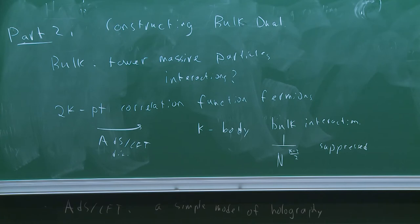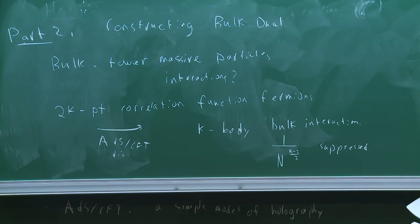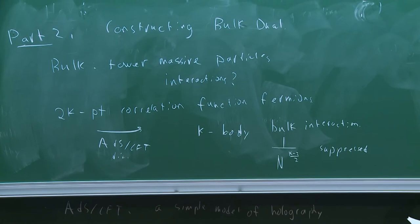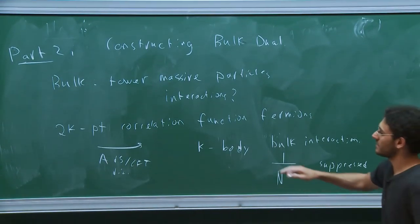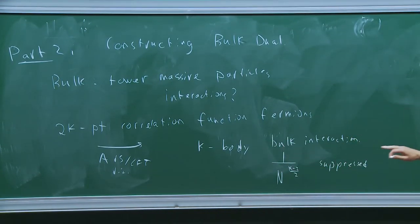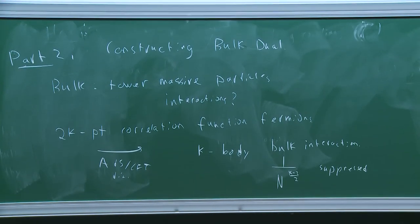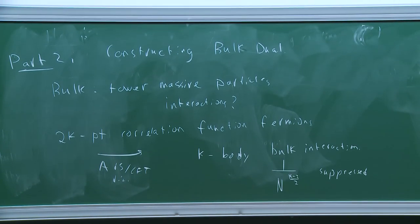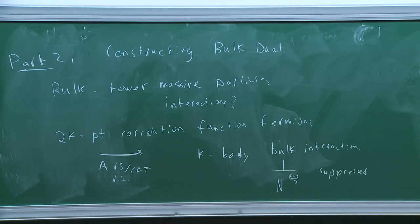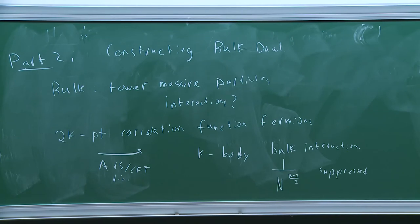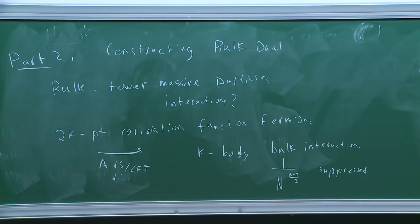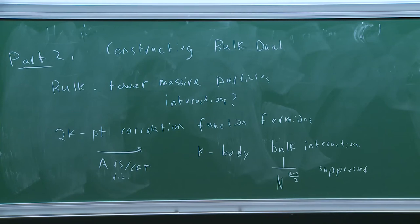The program is: compute these correlation functions, construct the bulk Lagrangian, and then hope that one can give some interpretation of this bulk Lagrangian — hopefully in terms of some simple theory of extended objects — which will naturally reproduce those couplings. It's unclear if that would work, but we can at least find the couplings.